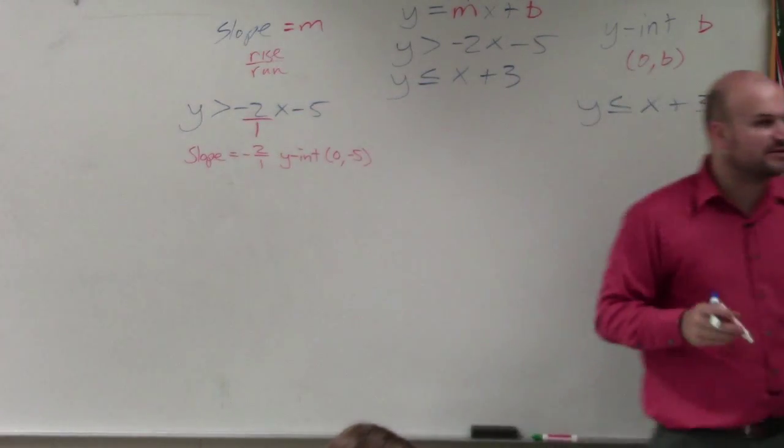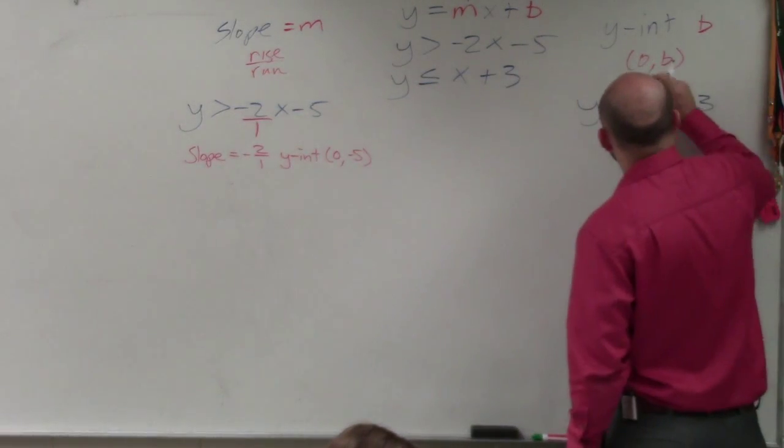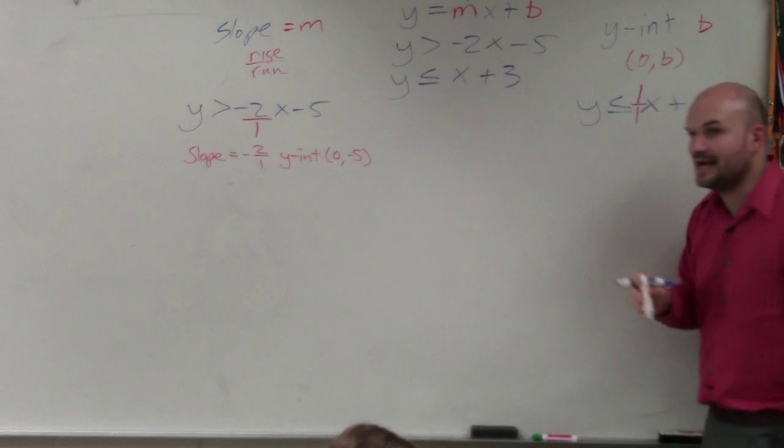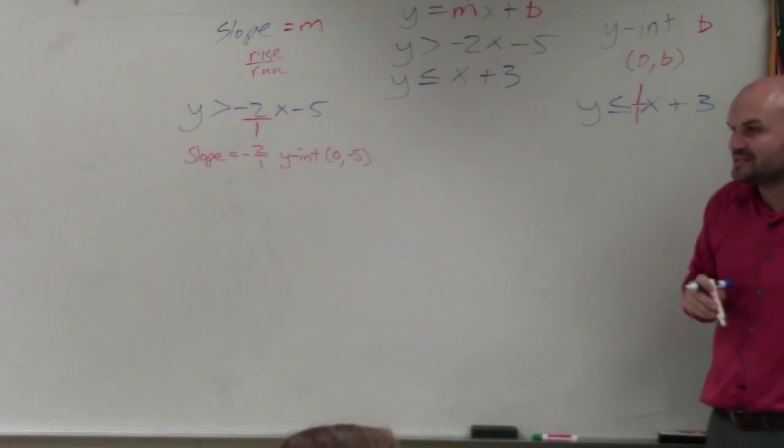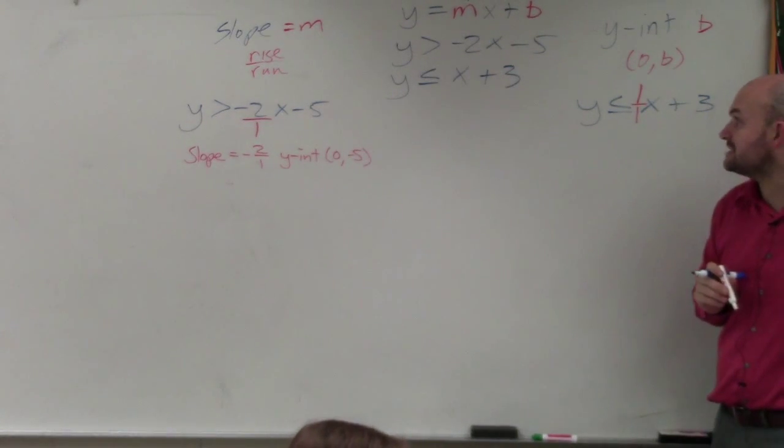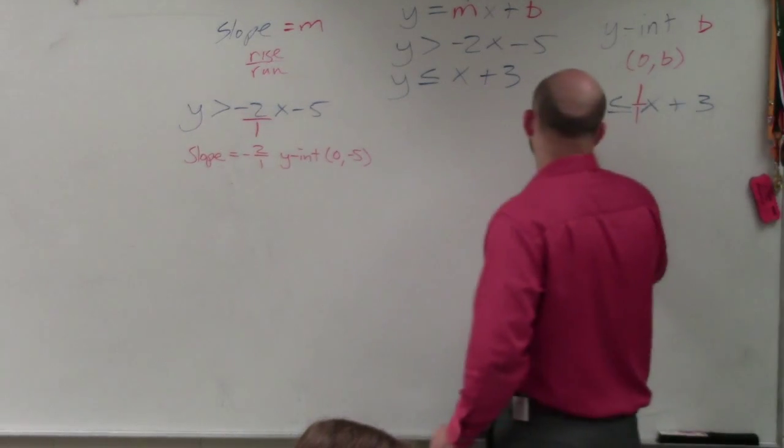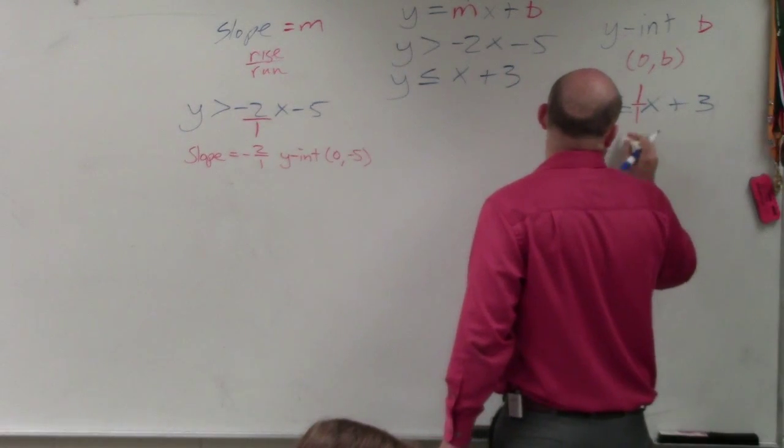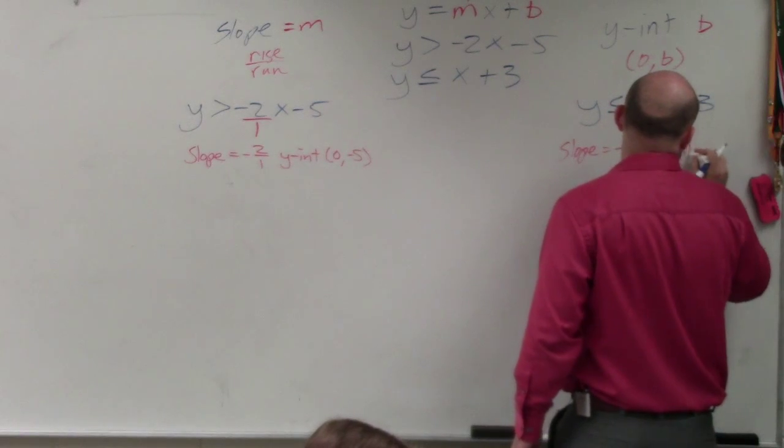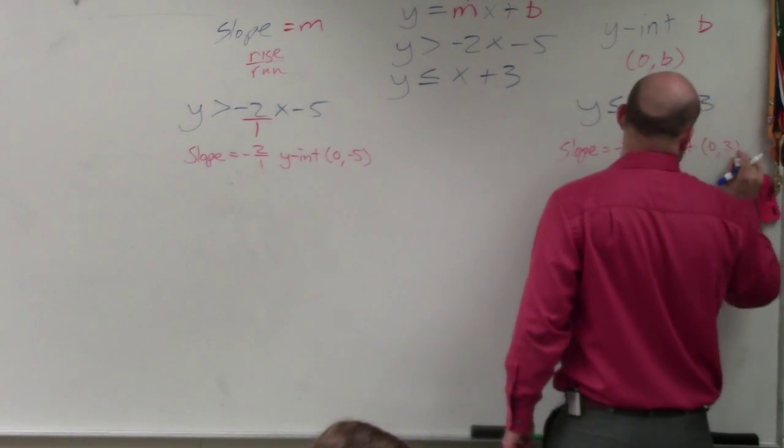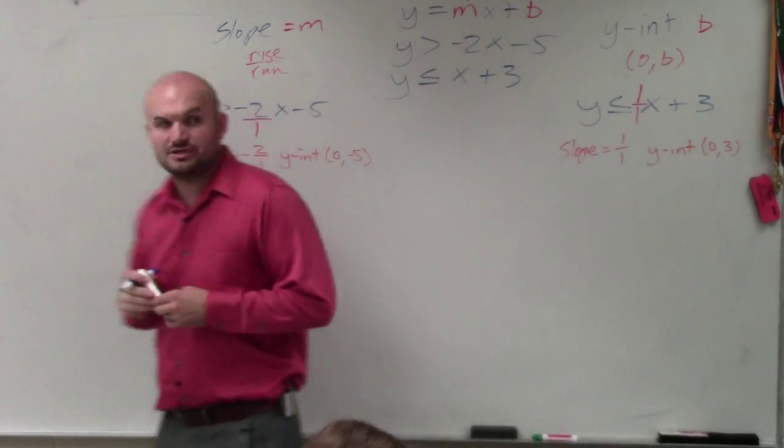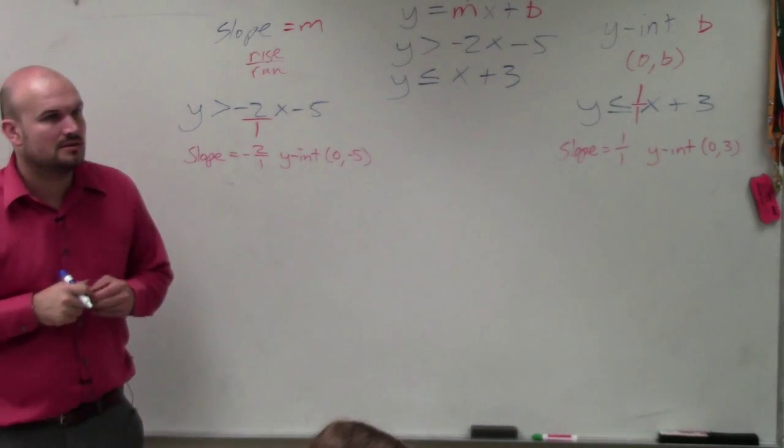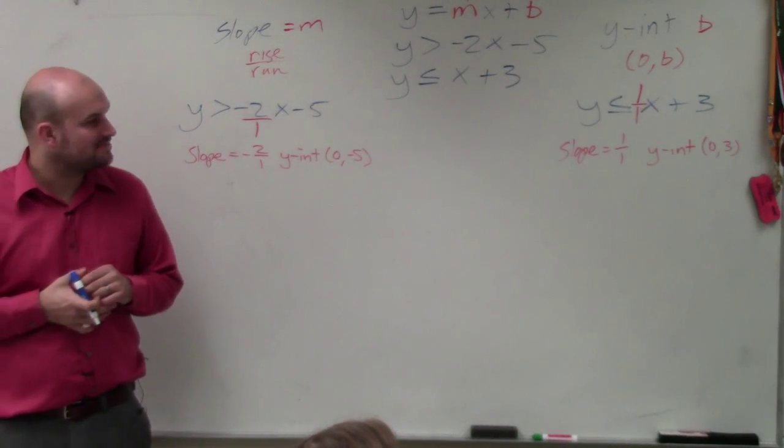Over here, we don't even have a number in front. So you need to understand that we can rewrite that as 1 over 1, because 1 over 1 times x is still the same thing as just x. So my slope is 1 over 1, and my y intercept is 0, 3. Anybody have any questions so far? Haven't even gotten to graphing yet. Just been labeling.